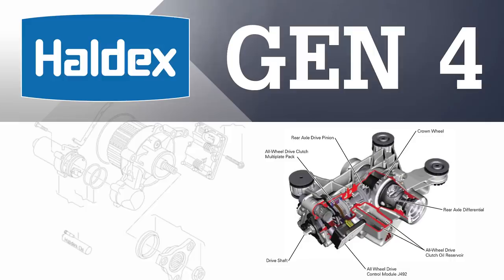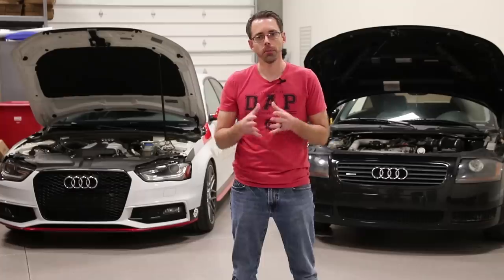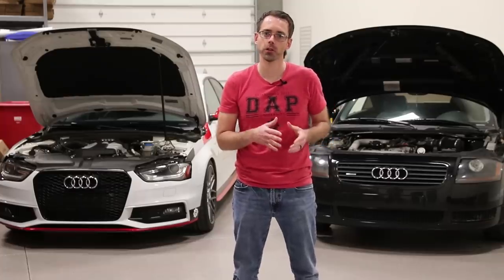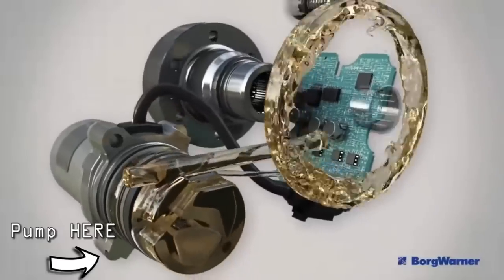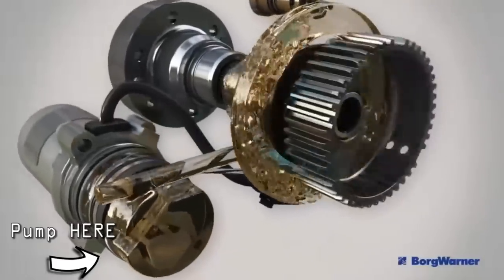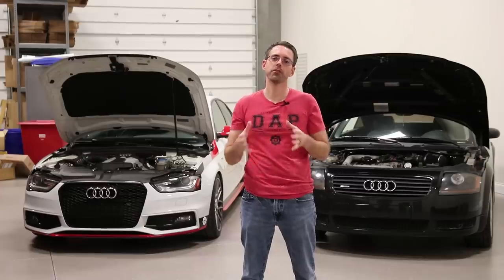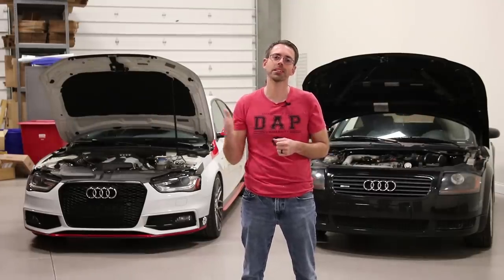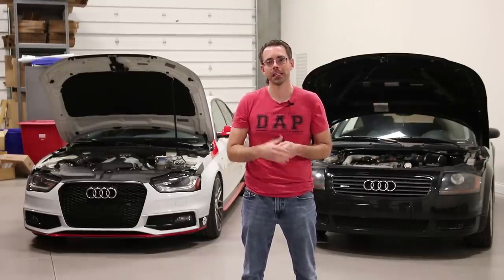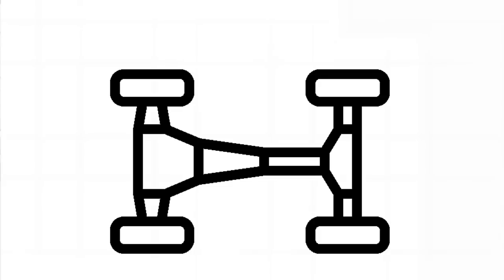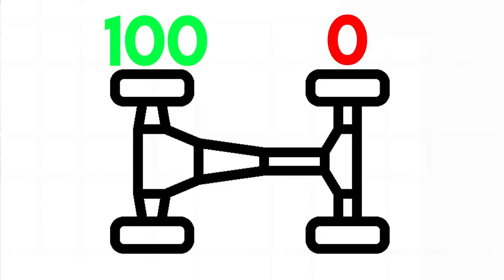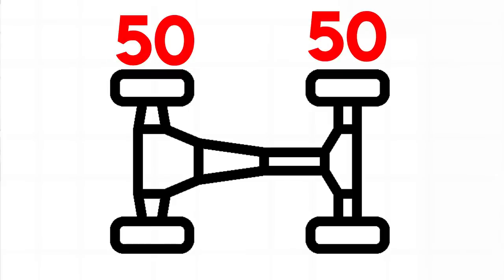The Gen 4 Haldex system, while notably different in many ways, used the same basic layout as previous generations. The main changes are a further simplified hydraulic system and, most notably, the change to an electronic pump as the primary source of fluid pressure for the Haldex clutch. The Gen 4 system is the first Haldex system to be proactive, meaning it does more than just react when wheel slippage occurs. The power split is 100% to the front and 0% to the rear, with the ability to match up to a 50-50 distribution.